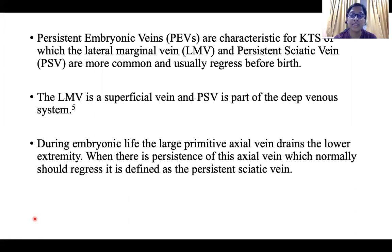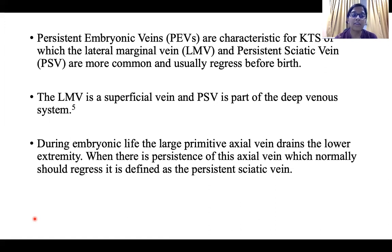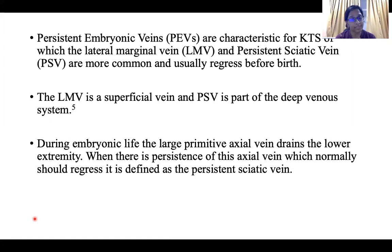Persistent embryonic veins are characteristic for Klippel-Trénaunay syndrome, in which the lateral marginal vein and persistent sciatic vein are more common, and they normally should regress before birth. The lateral marginal vein is a superficial vein, whereas the persistent sciatic vein is part of the deep venous system. During embryonic life, the large primitive axial vein drains the lower extremity, and persistence of this axial vein, which normally should regress, is defined as the persistent sciatic vein.